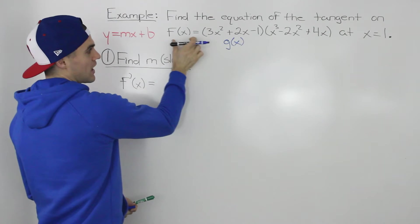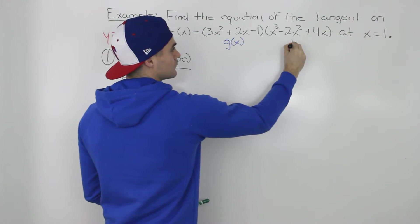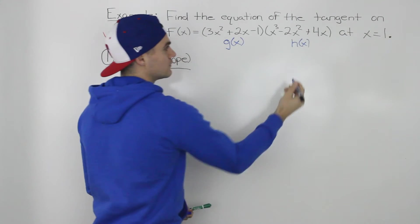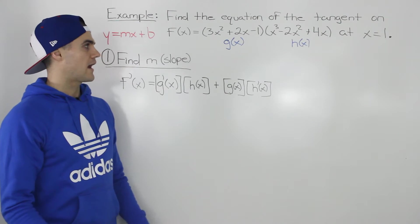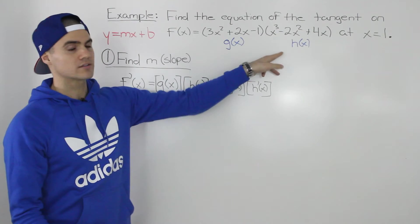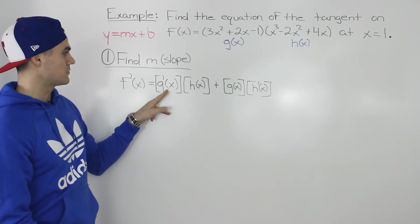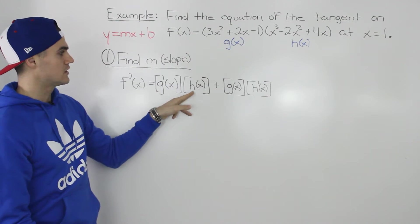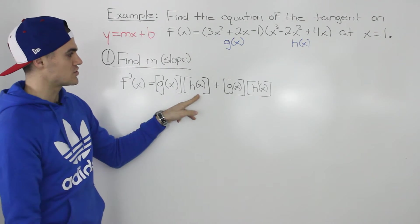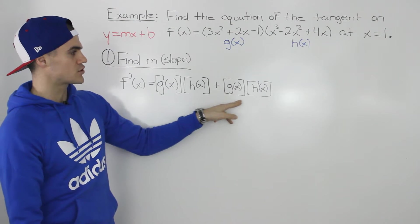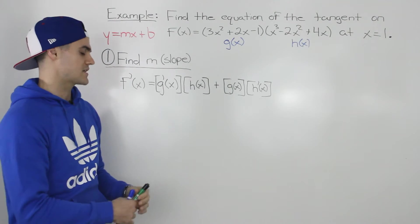Notice how this function f of x is the product of two separate functions. We know that if a function is the product of two separate functions, then its derivative is going to be the derivative of that first function times that second function h of x plus the first function times the derivative of the second function.